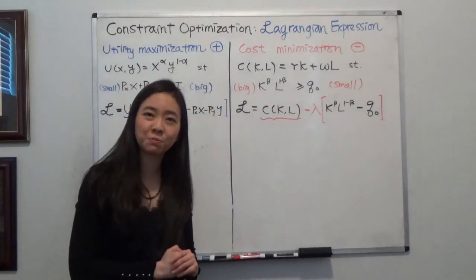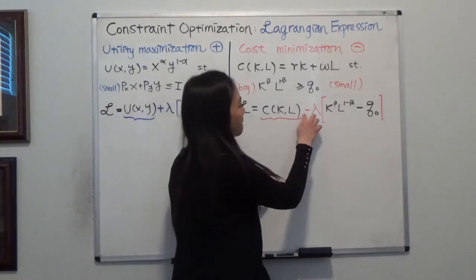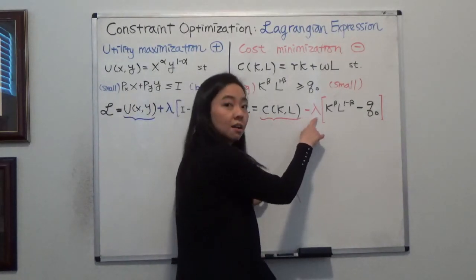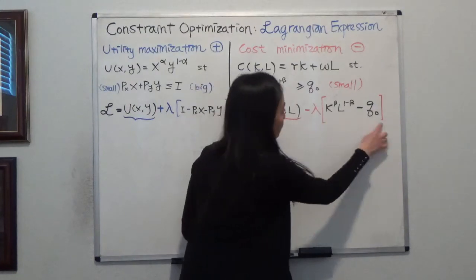And now since we're trying to minimize the cost, you should put minus your Lagrangian multiplier, lambda, times the constraint.